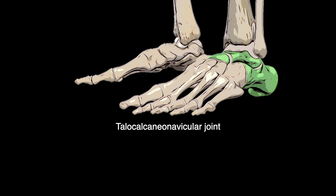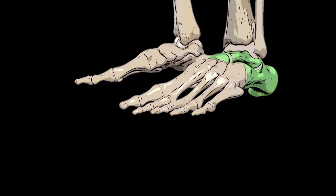The talocalcaneonavicular joint is a synovial ball and socket joint between the head and inferior surface of the neck of the talus, the posterior concave surface of the navicular, and the calcaneus. It is surrounded by a thin loose fibrous capsule lined by a synovial membrane. The talocalcaneo and talonavicular parts are supported by a network of ligaments: the dorsal talonavicular ligament, the spring ligament, and the bifurcate ligament.